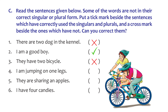The fourth one: 'I am jumping on one leg' — we're talking about one leg, so we don't require S at the end of the word leg. Put a cross mark. The fifth one: 'They are sharing an apple' — that is singular form, so we don't require S at the end of apple. Put a cross mark. The last one: 'I have four candies' — that's right, you're talking about more than one candy, so put a tick mark.